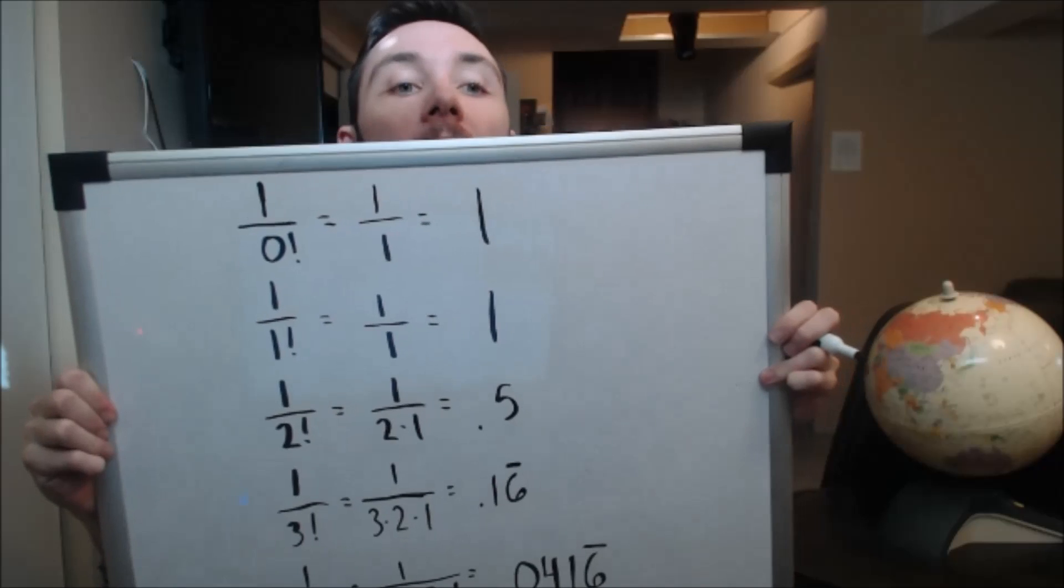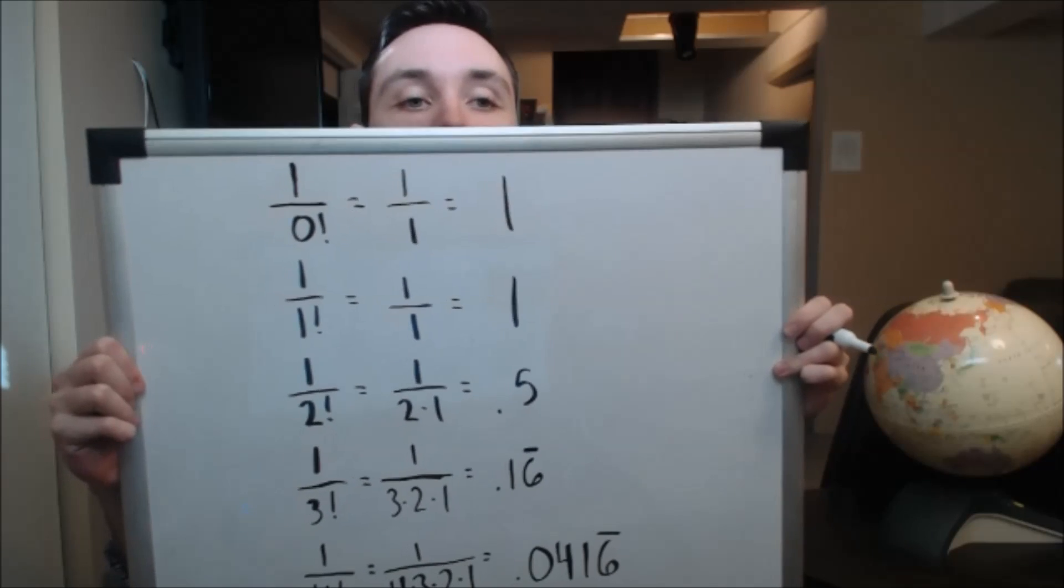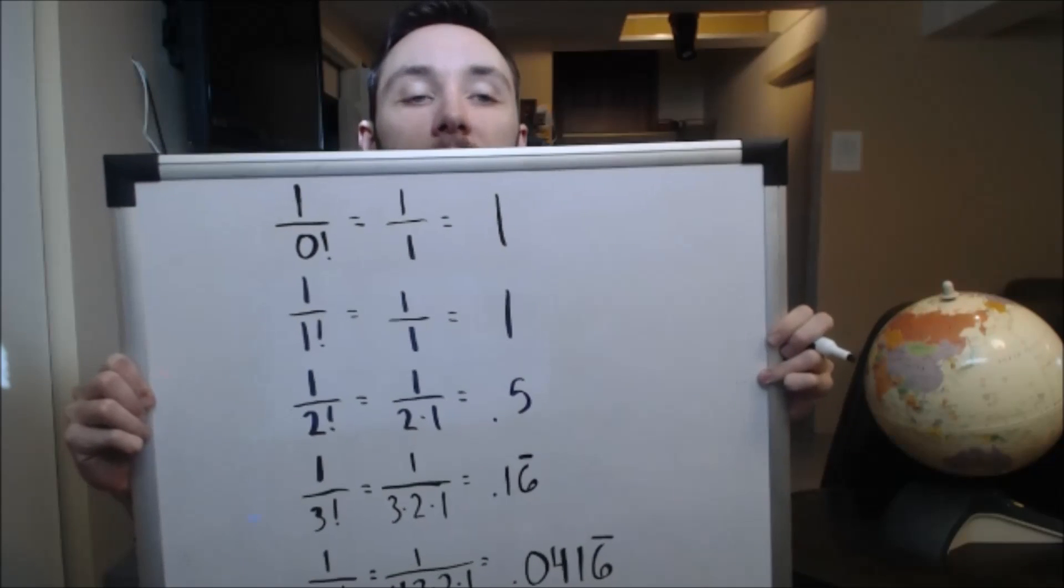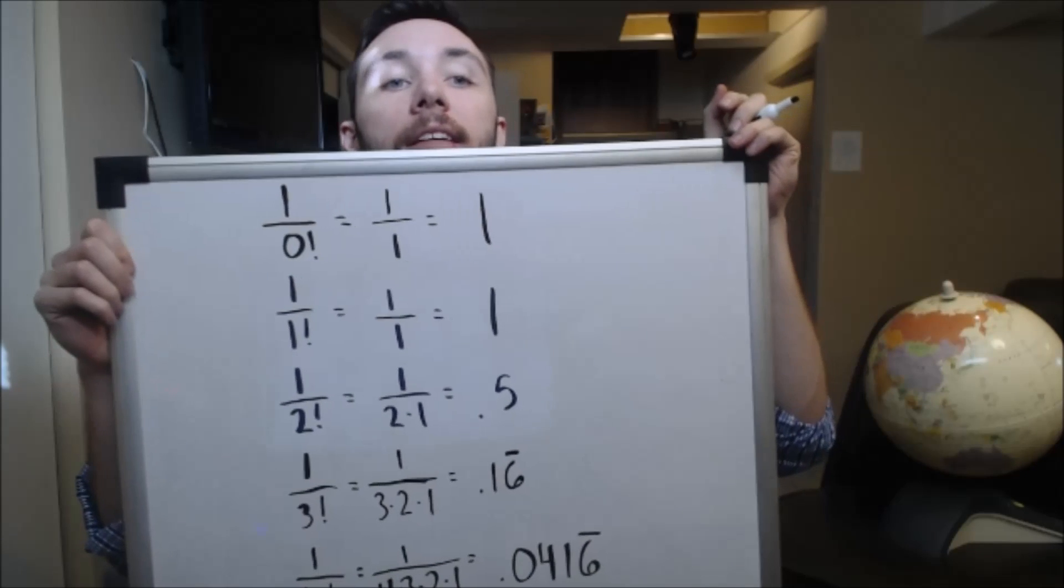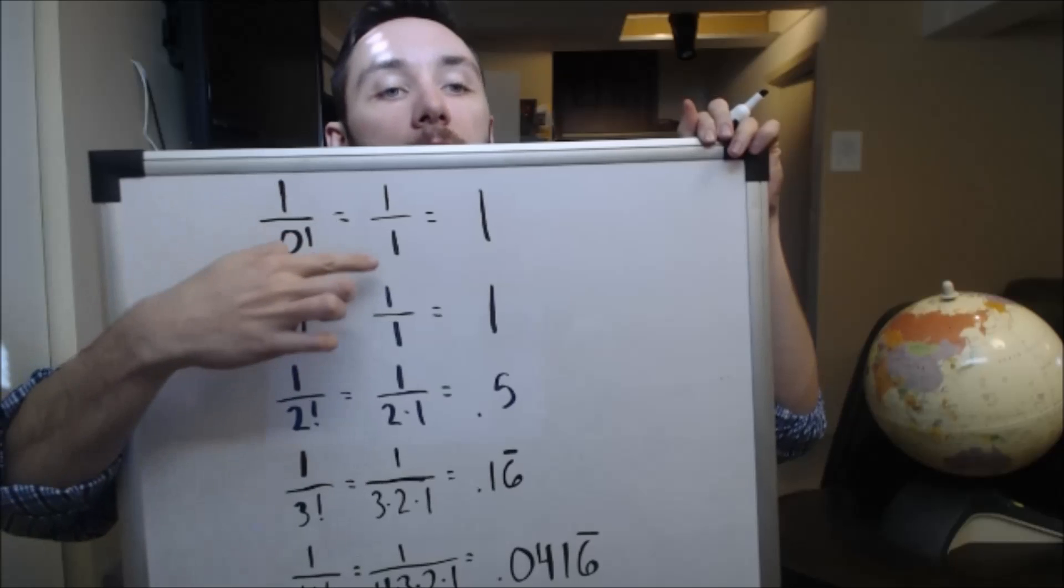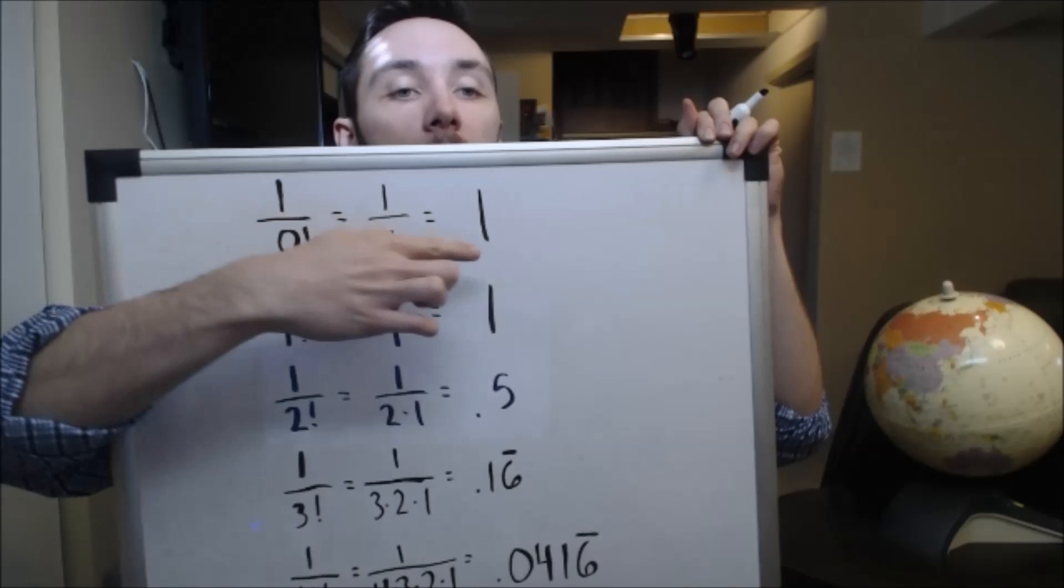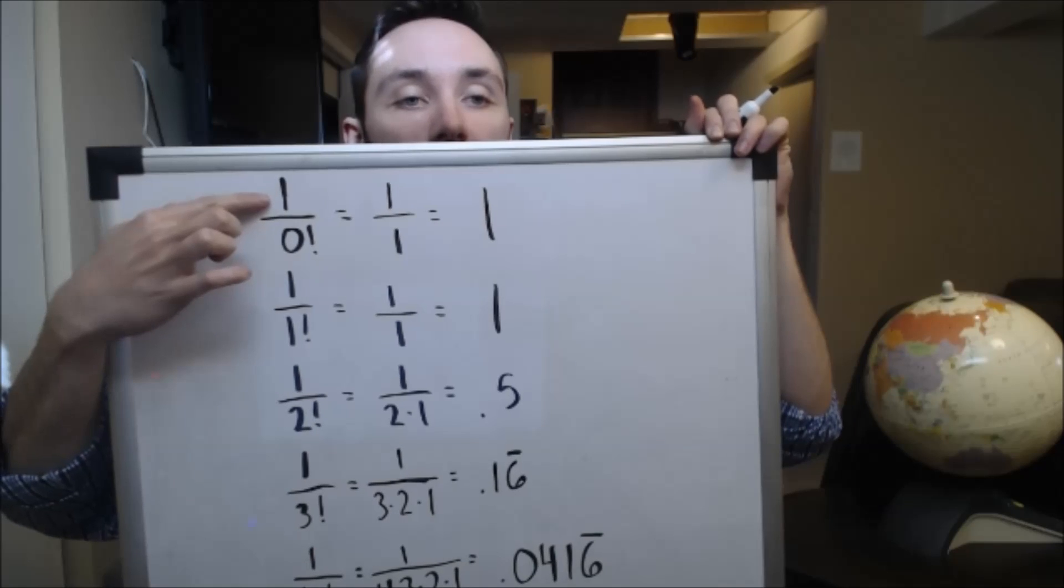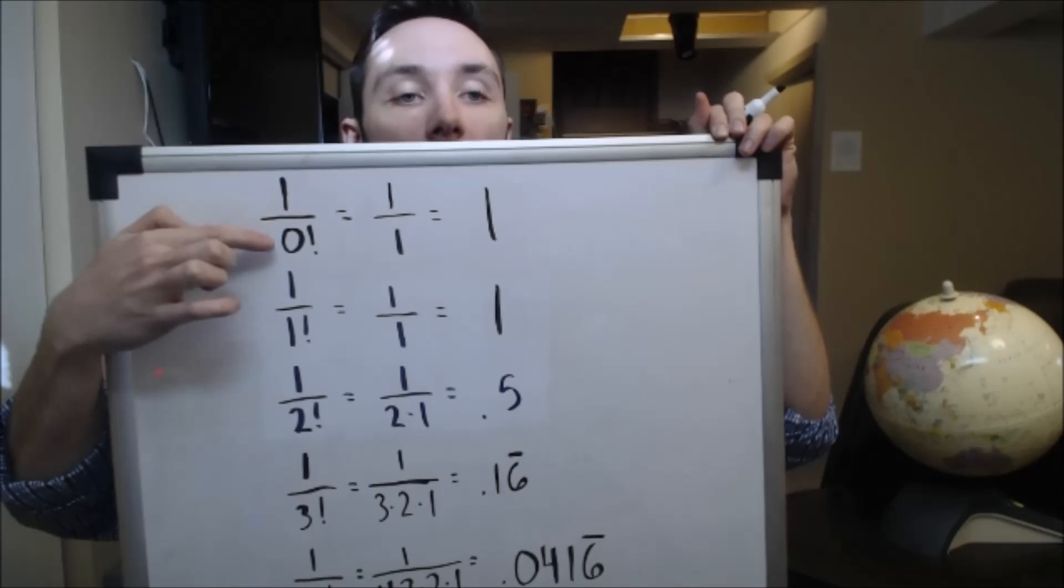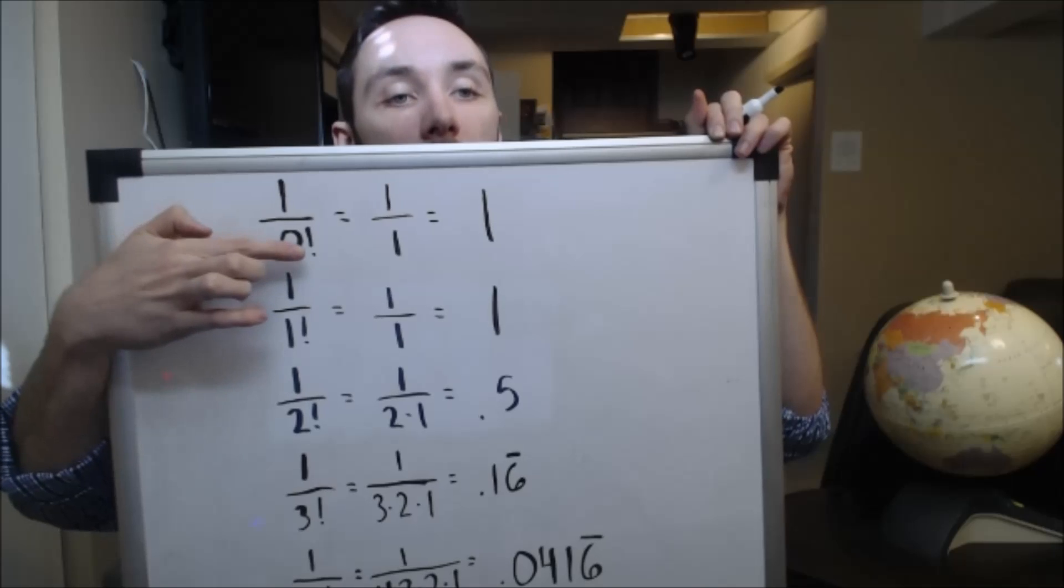Okay. So, yeah, very strange angle. I understand this, but I need the long board. Another way to get to this idea is to consider the following. Let's just say I have the number 1 over, starting with 0, factorial.